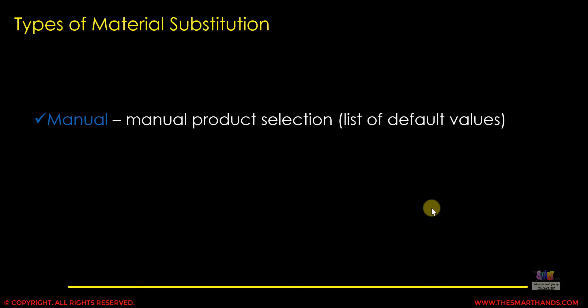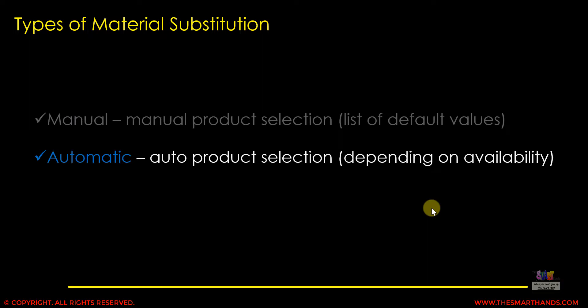There are two types of material substitution. With manual product selection, you can have more than one substitute — for example, replacing material A with B, C, or D. The system shows a pop-up asking which one to select. With automatic selection, no pop-up appears; based on availability and sequence, the system automatically picks the substituted material from the maintained list.